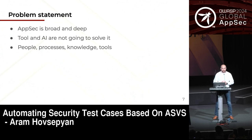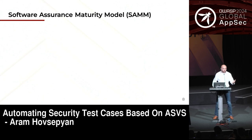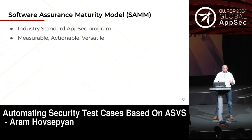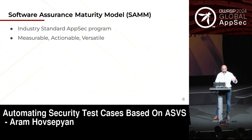Application security is both a broad discipline and goes very, very deep. Tools and AI are not going to solve it just like that. It comes down to people, processes, knowledge, and tools. SAMM is the solution — it's an industry-standard AppSec framework that measures where you are in terms of security practices, gives you an actual maturity score, and it's actionable. It's also agnostic of technology and company.